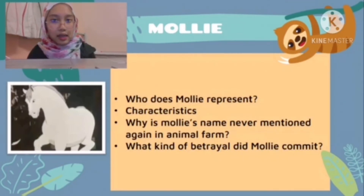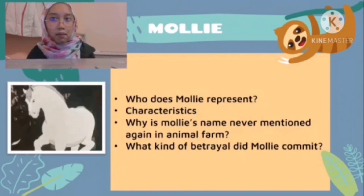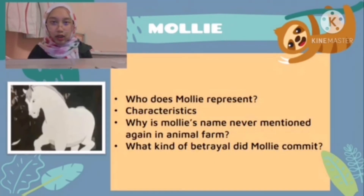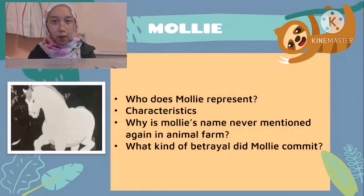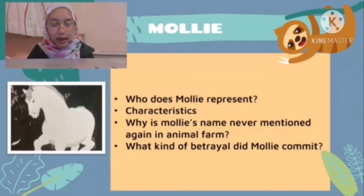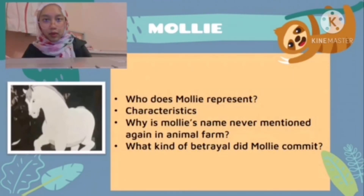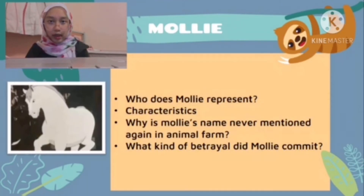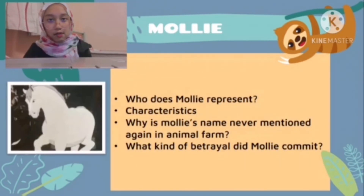She has a difficult time with her new life on Animal Farm, as she misses wearing ribbons in her mane and eating sugar cubes. Molly is a defector from the politics of Animal Farm and is never mentioned again by the other animals, who find her abandonment of animalism and rebellion shameful. When Jones attempts to retake the farm, Molly is missing and found hiding in her stall, scared by the gunshots.